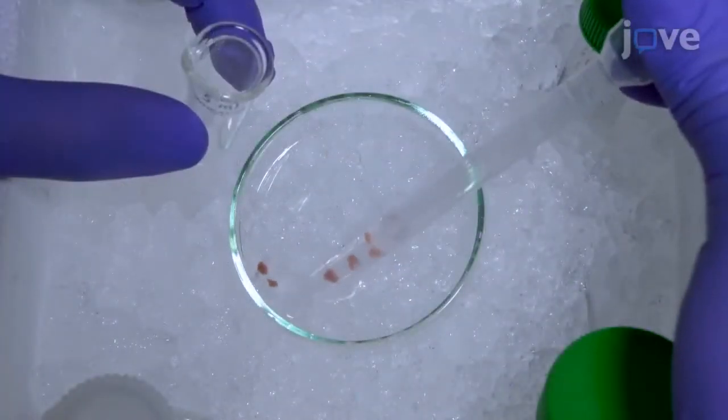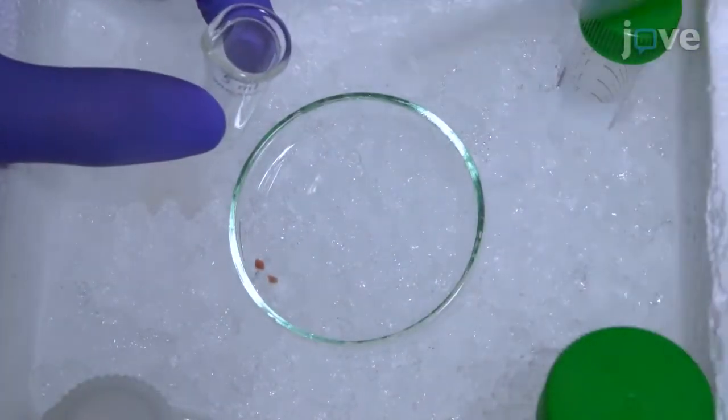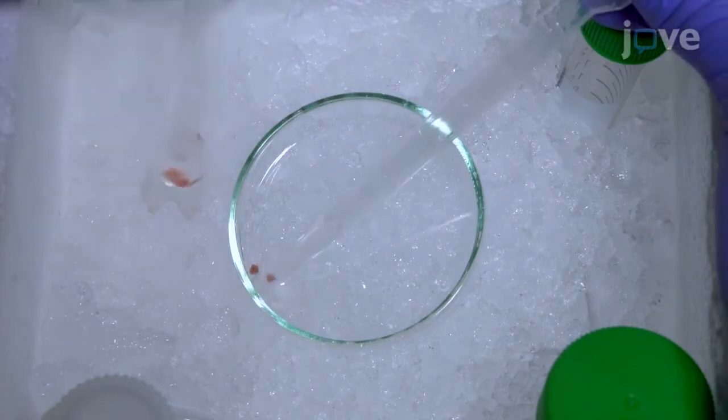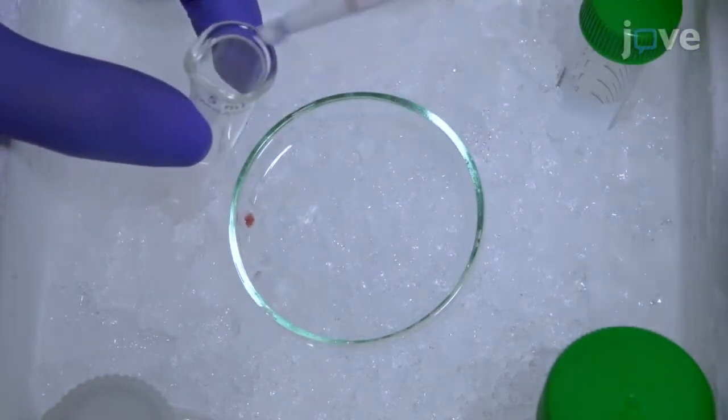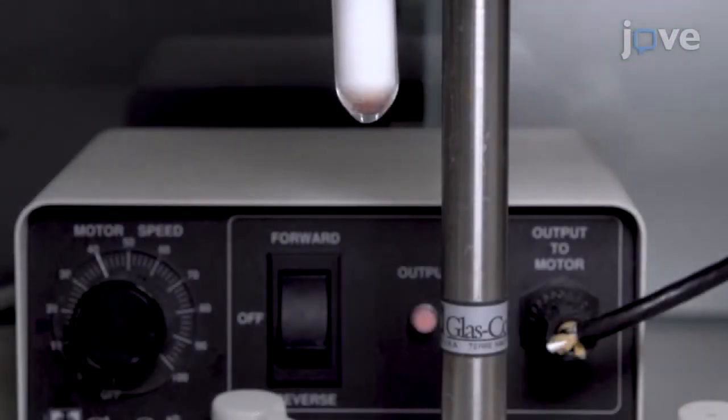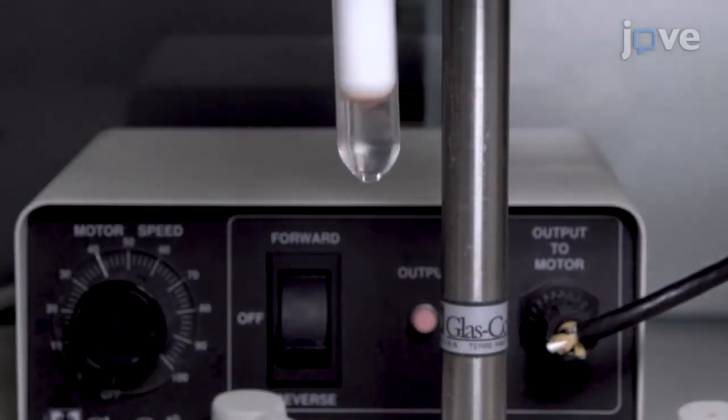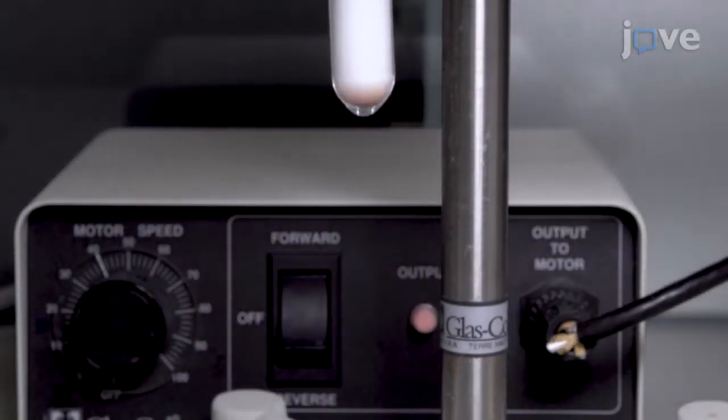When all of the tissue has been cut, use a cut pipette tip to transfer the entire volume of solution and tissue fragments into a Potter Elvihem glass and use a grinder to mechanically disrupt the tissue at 30 to 40 rotations per minute.